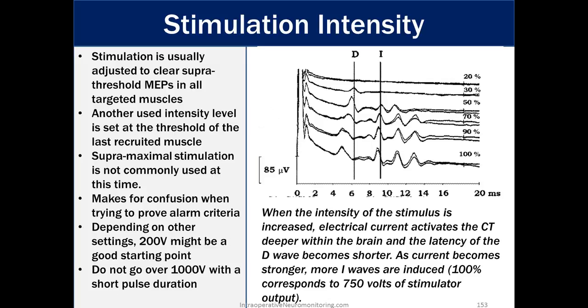Stimulus intensity. Stimulation is usually adjusted to clear super-threshold MEPs in all targeted muscles. Another used intensity level is set at the threshold of the last recruited muscle. Super-maximal stimulation is not commonly used at this time. So the fact that people aren't doing super-maximal stimulation does kind of reduce your reliability of using a percentage decrease in MEPs. If you were going to do that, you would want to know what maximal intensity is, maximal amplitude is, and then try to decipher loss of axonal function off of that baseline. So this makes for confusion when trying to improve alarm criteria depending on other settings. 200 volts might be a good starting point. Do not go over 1,000 volts with a short pulse duration.